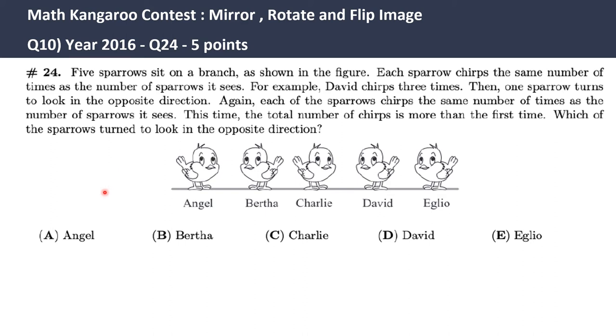Now let's look at this five-pointer question. Question 24 for year 2016. Five sparrows sit on a branch as shown in the figure. Each sparrow chirps the same number of times as the number of sparrows it sees. For example, David chirps three times. Then one sparrow turns to look in the opposite direction.